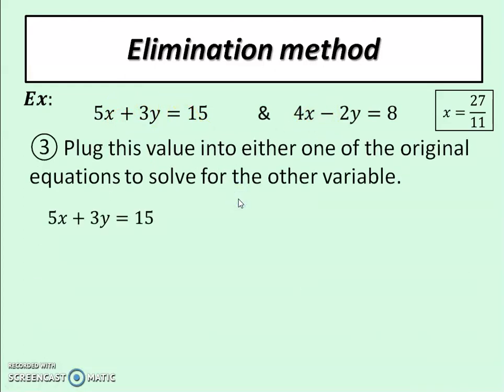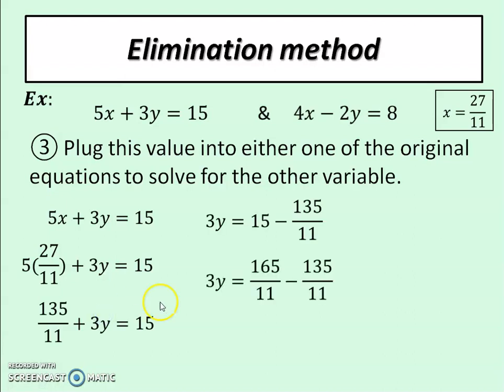So supposing I pick this one. If I plugged in my 27 over 11 and solved through, bring all the like terms together, this is what I would get. I would get that y is equal to one third of 30 over 11, which is 10 over 11. That's my y value.